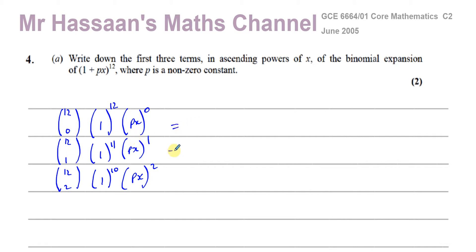So now all we do is, we use the NCR button. Well, 12C0 is going to give you 1. And 12C1 is going to give you 12. And 12C2, let's find out what that's going to give us.